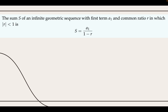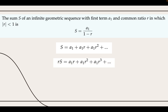Our final formula deals with the sum of an infinite geometric sequence with a common ratio whose absolute value is less than 1. In such a sequence each term gets closer to 0, meaning the sequence will converge and the sum of its terms approaches a certain number. In a geometric sequence with a common ratio of absolute value greater than or equal to 1, the sum will diverge. The proof is similar to the finite case: we write the sum in terms of the first term and powers of the common ratio, multiply by r, subtract the second equation from the first — yielding only the first term — and divide by 1 minus r to get the desired result.